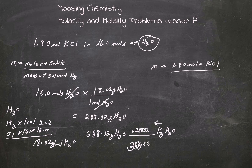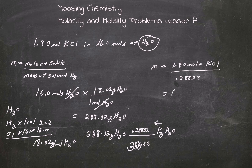Molality equals moles of solute divided by mass of solvent in kilograms: 1.80 divided by 0.28832. That gives exactly 6.24 m (molal) of KCl. That's it for this lesson — you guys have a great day. We'll see you back here at Moose and Chemistry.